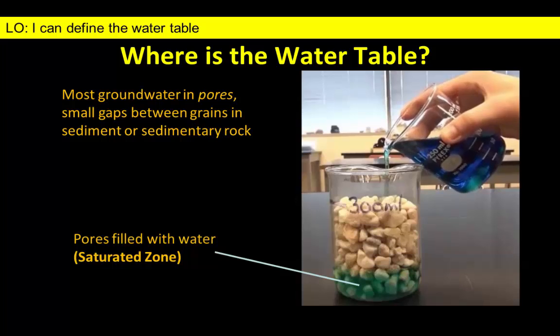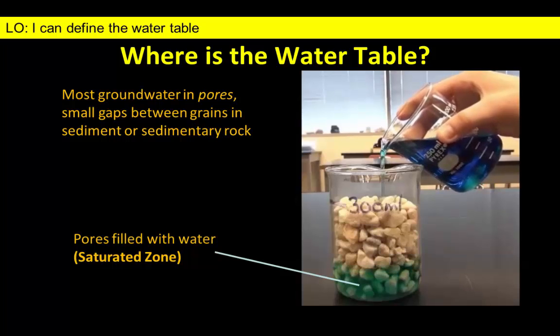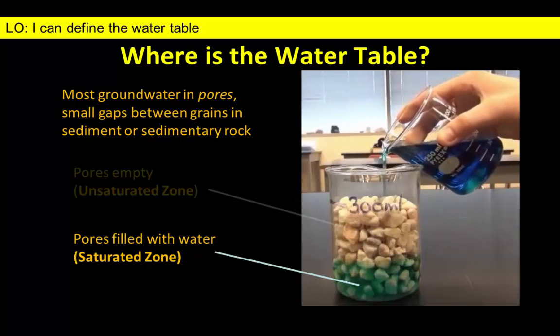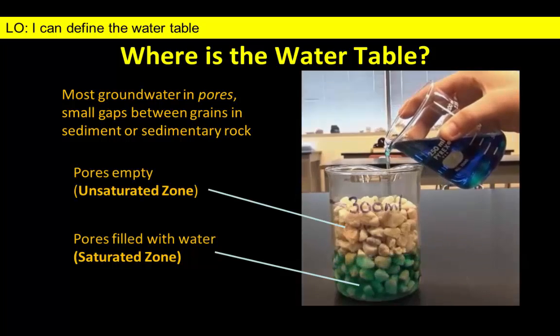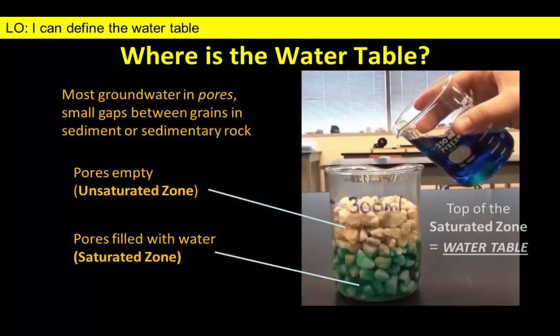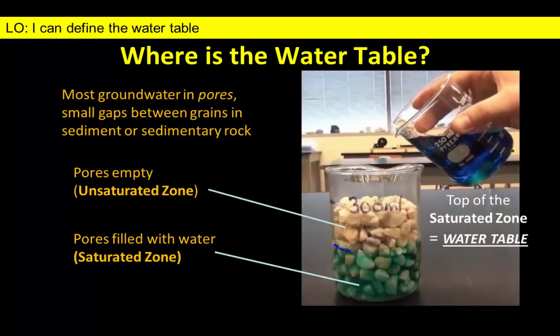Where the pore spaces are full of water is known as the saturated zone. Closer to the surface, the spaces are empty or only partially filled — these earth materials are in the unsaturated zone. The top of the saturated zone is known as the water table.